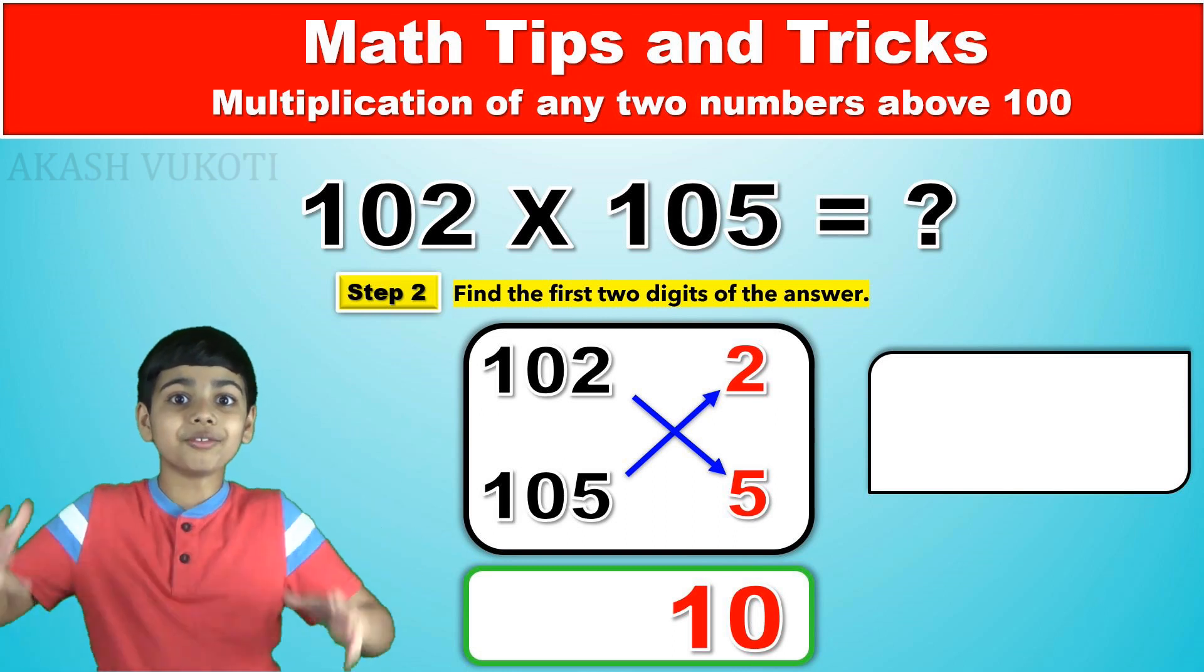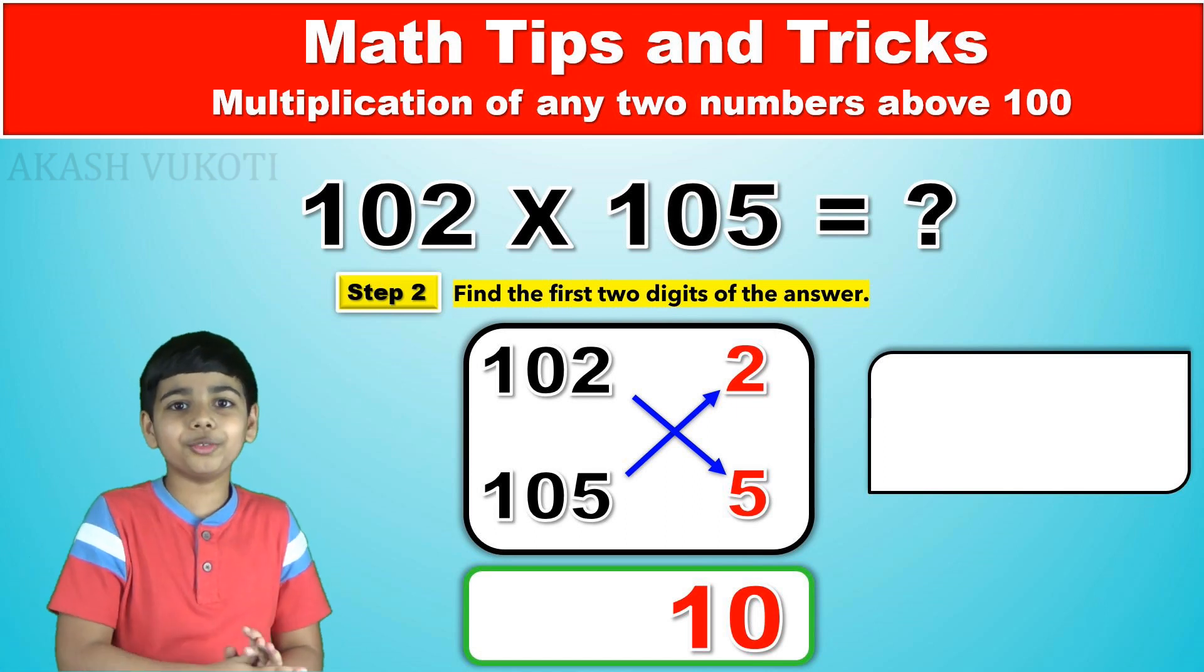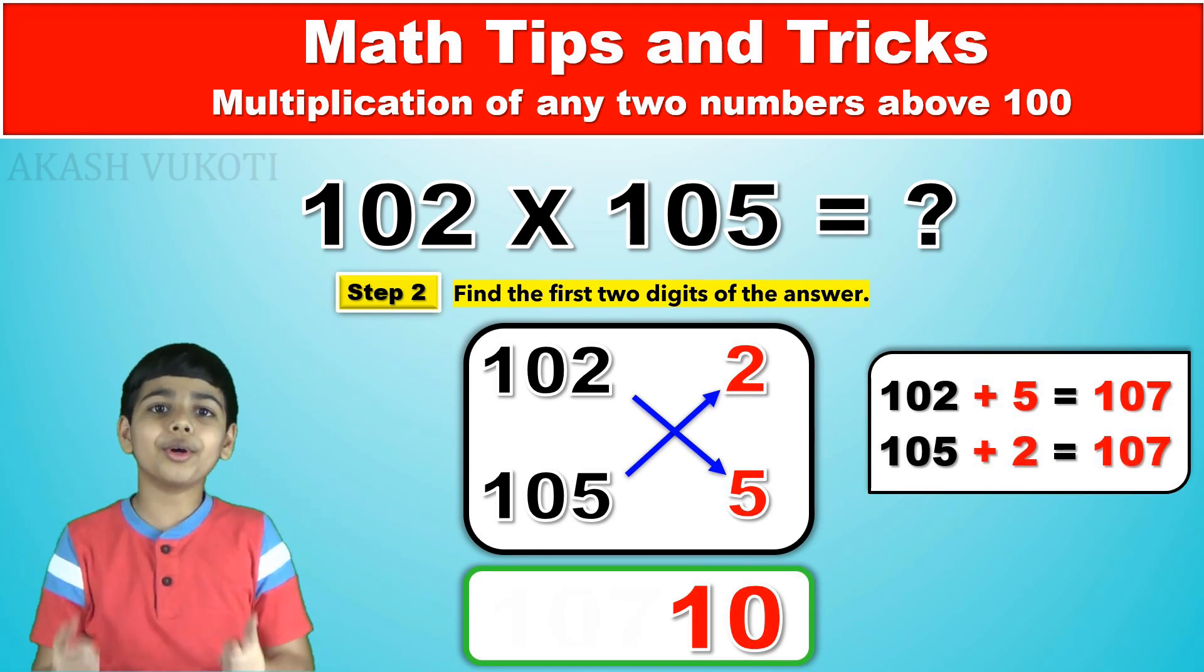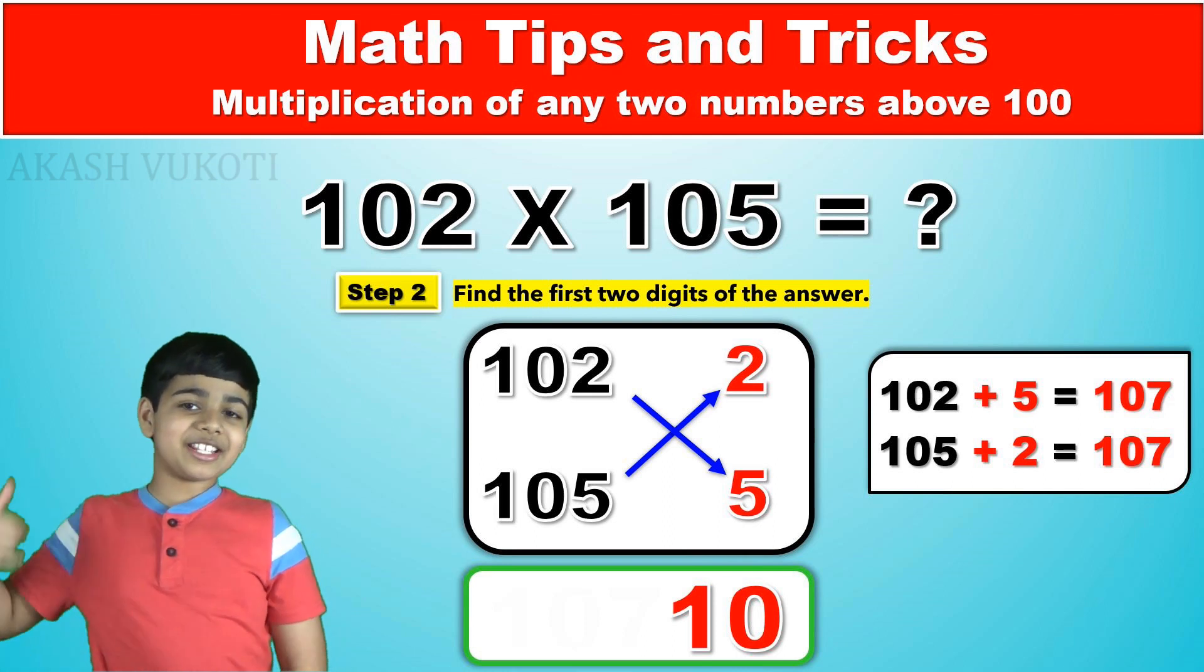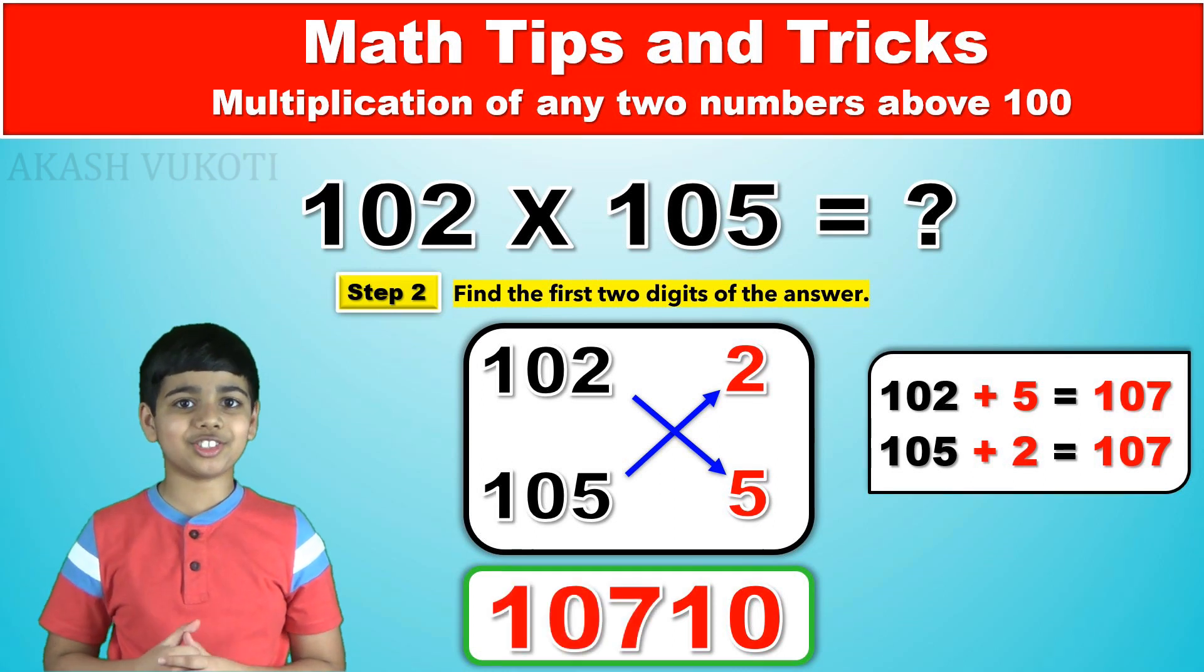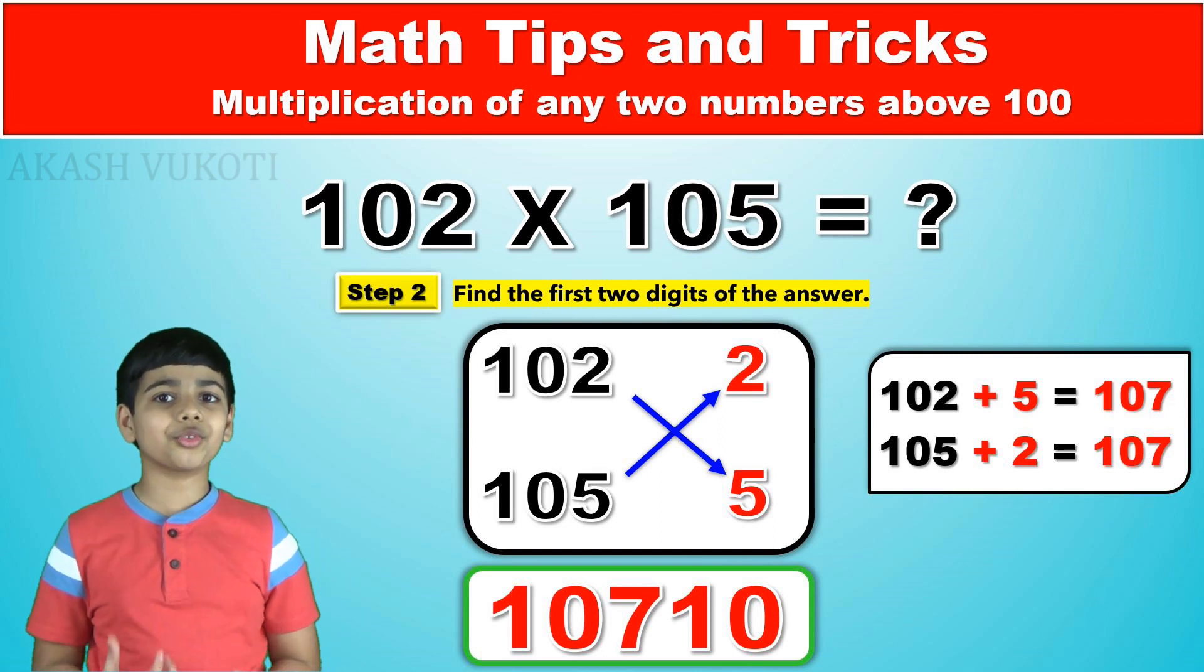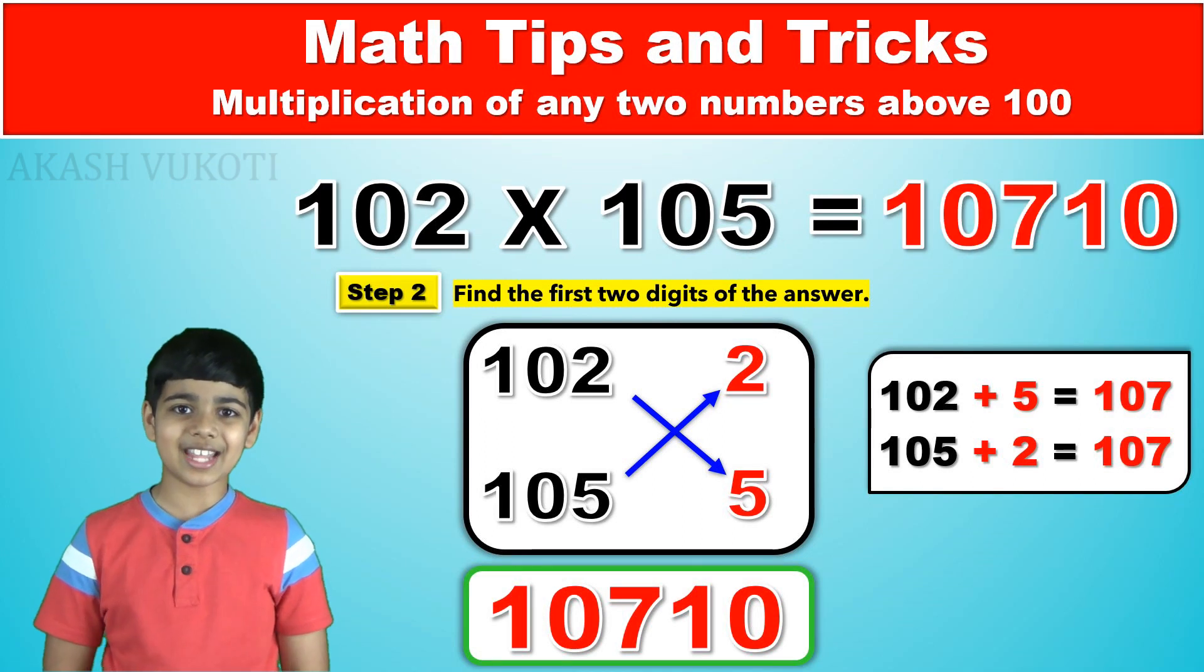And as it turns out, you can choose whichever one is comfortable to you. Because 102 plus 5 and 105 plus 2 both equal the same thing: 107. And this number will be the first three digits of the answer. Hence, the answer to 102 times 105 is 10,710.